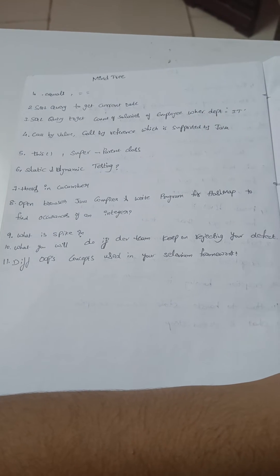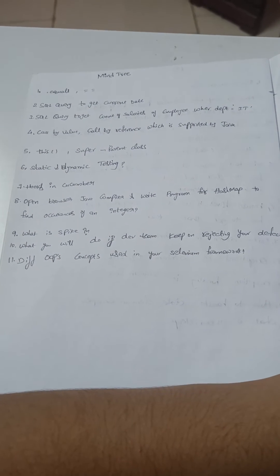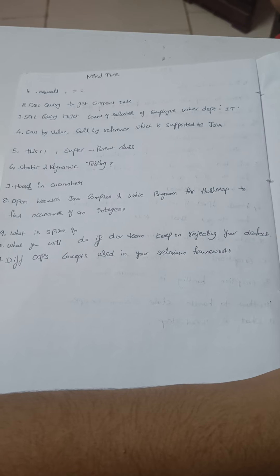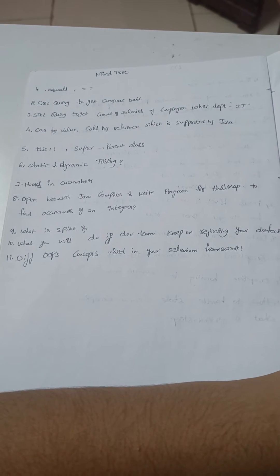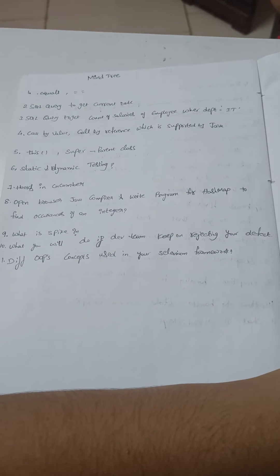I have to open my browser and open any online compiler and write a HashMap program to print the occurrences of each integer in an array. Basically they have provided an array and we have to write a program to count occurrences of each integer.